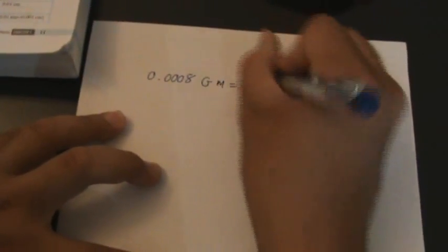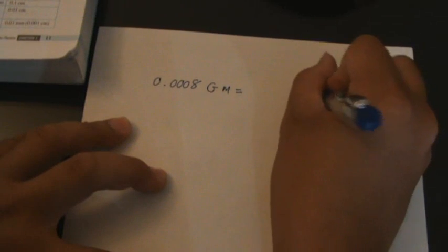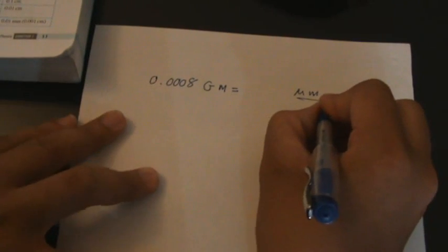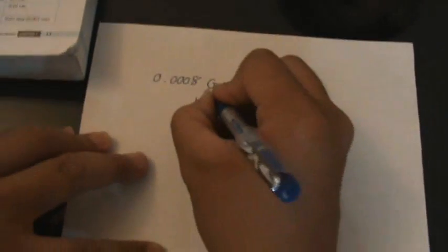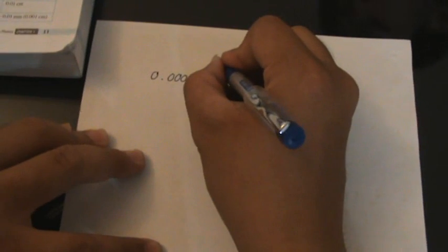So 0.0008 gigameter, do you want to change to micrometer? But before changing to micrometer, I want to change to meter first. Okay, the rule is this G is 10 power of 9.